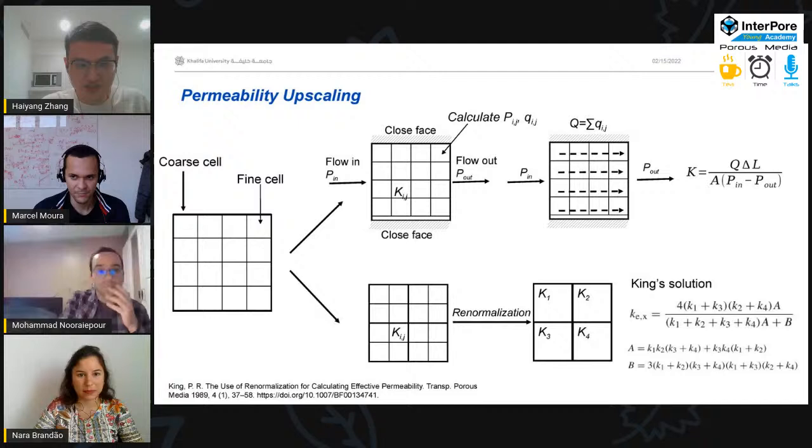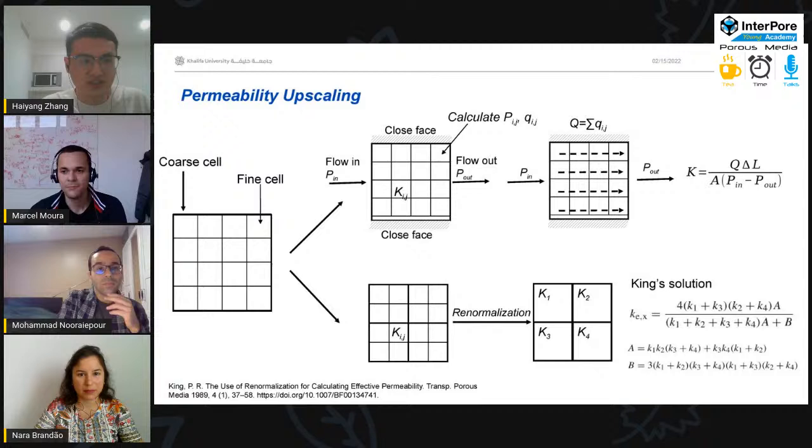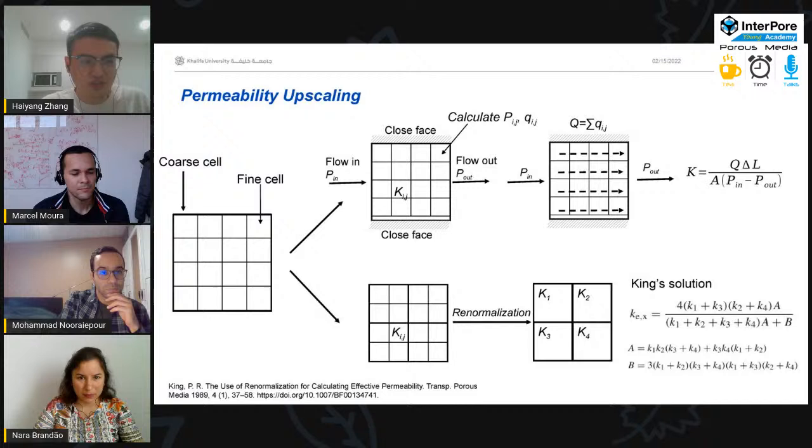For the numerical simulation, we calculate the pressure and flow rate of each fine cell, and then we can have the total flow rate. Therefore, the upscaling permeability or effective permeability can be determined by Darcy's flow equation.